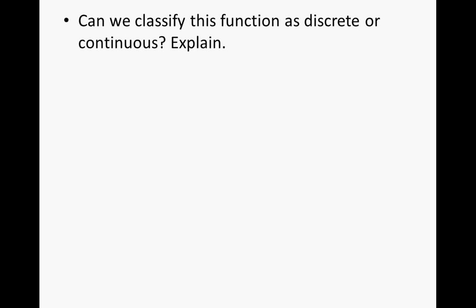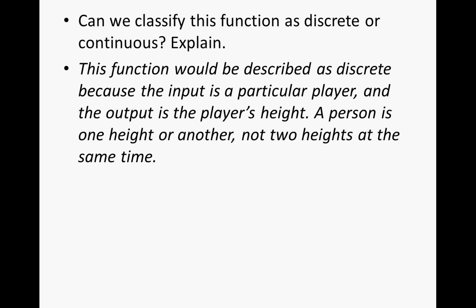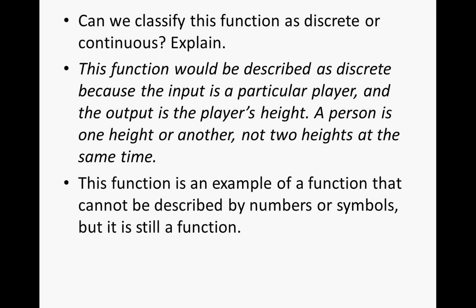Can we classify this function as discrete or continuous? This function would be described as discrete because the input is a particular player and the output is the player's height. A person is one height or another, not two heights at the same time. This function is an example of a function that cannot be described by numbers or symbols, but it is still a function.